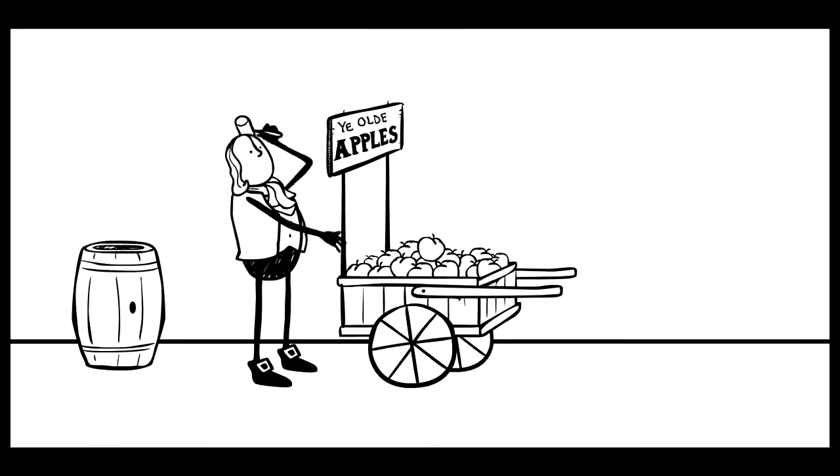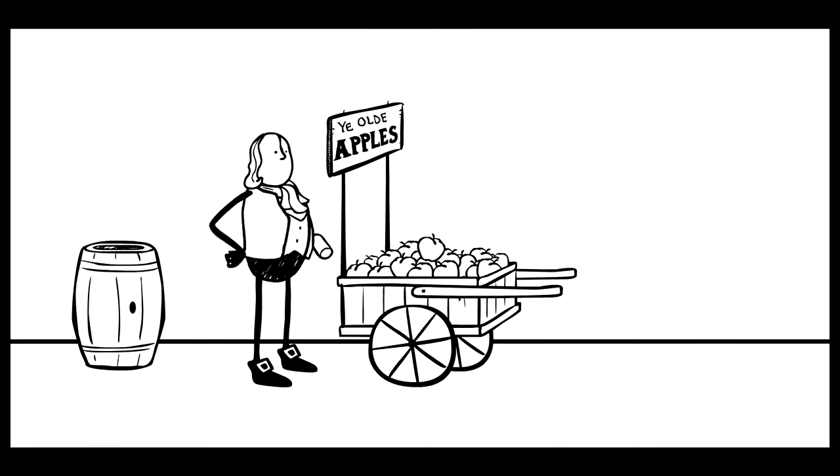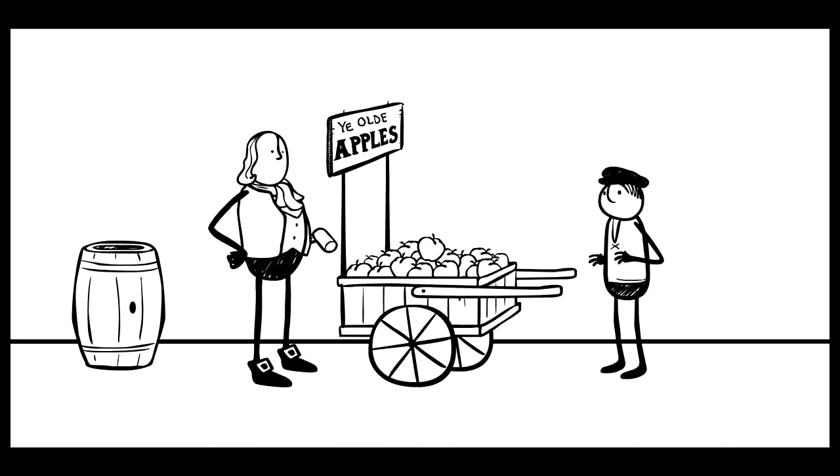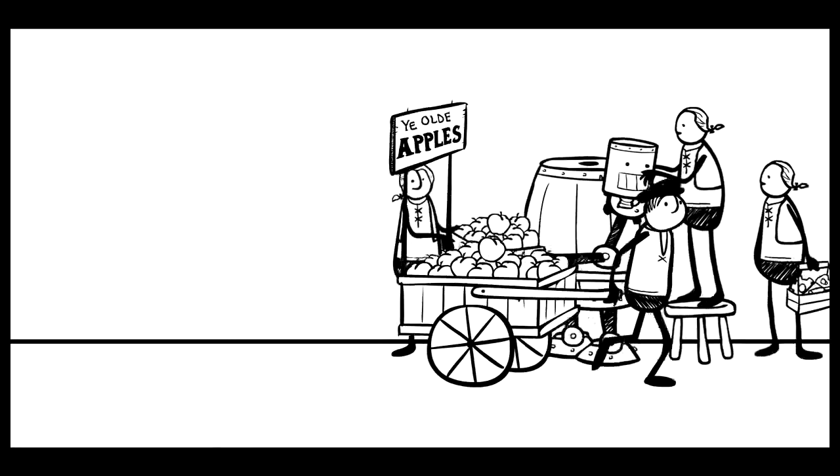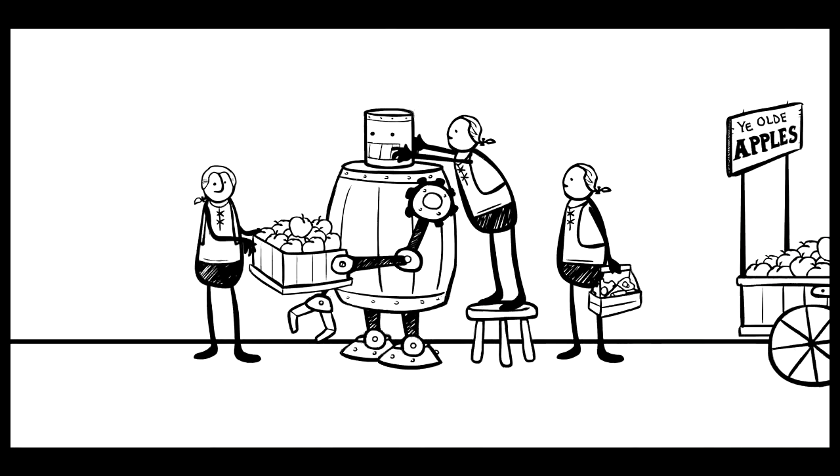So how did we, the people, lose control of our democracy to begin with? Let's go back a few centuries. Back then, there were just people. Some of them owned businesses. Some of them worked for businesses. Still, there were just people. Then people invented something entirely new. The corporation.